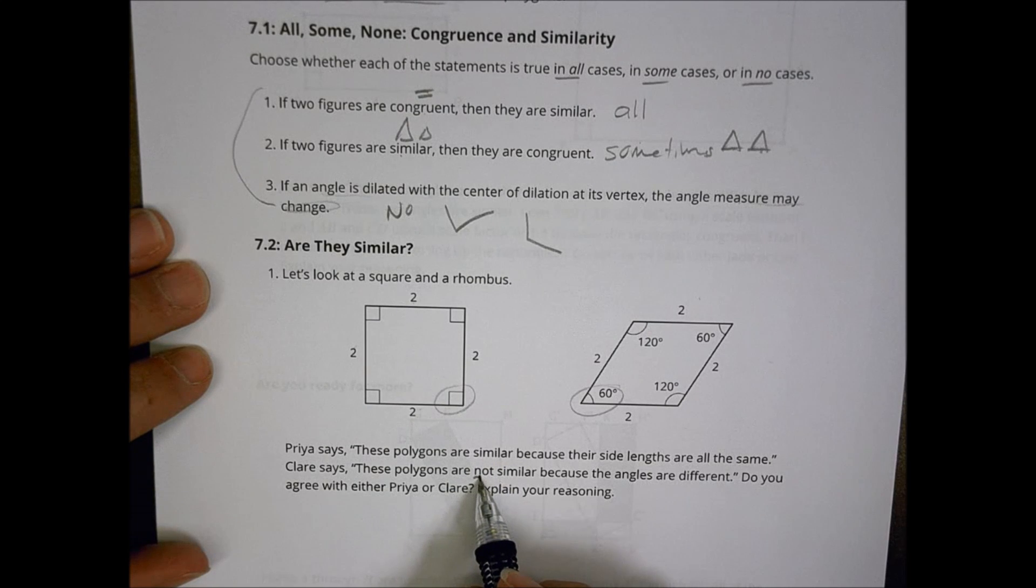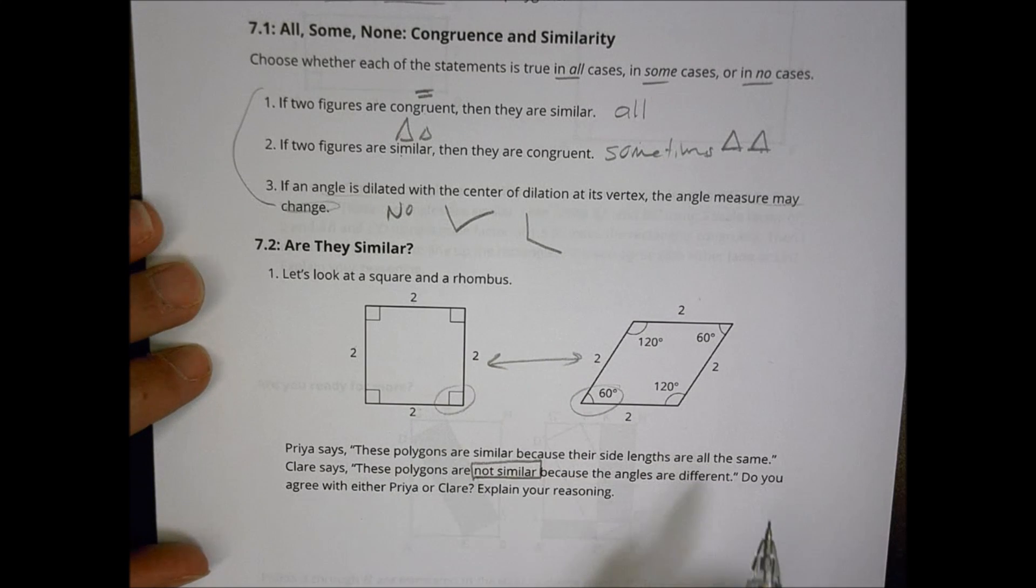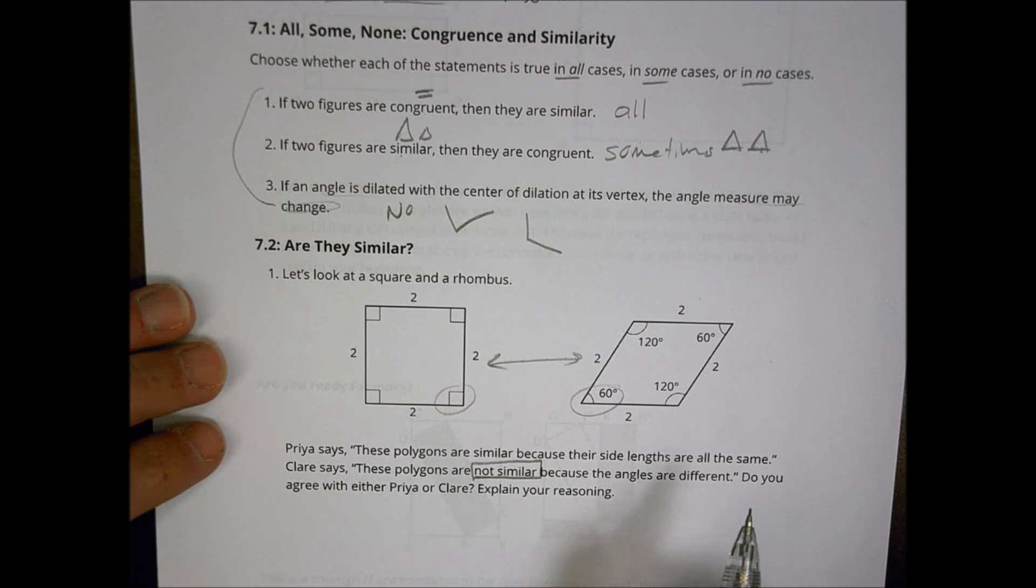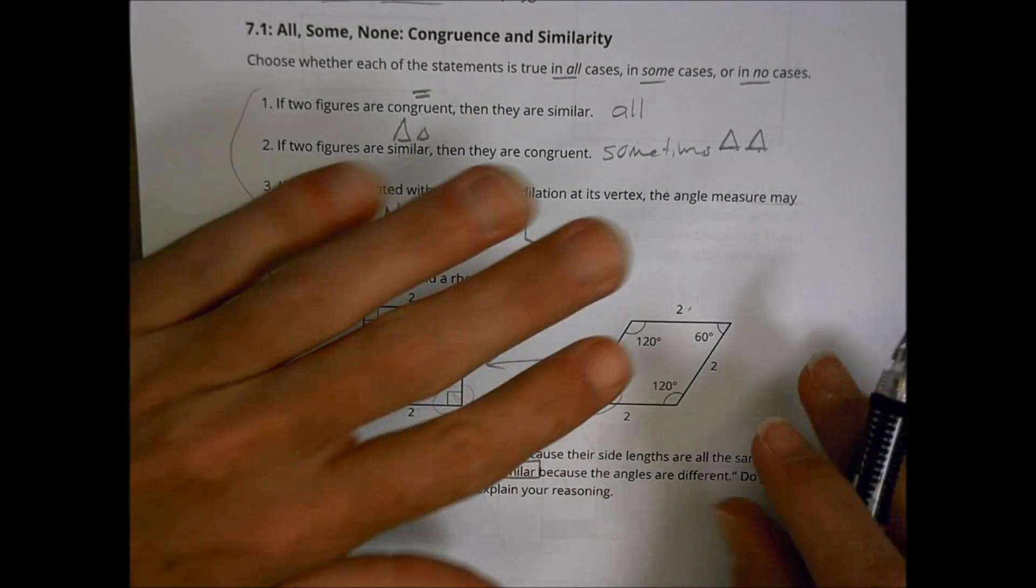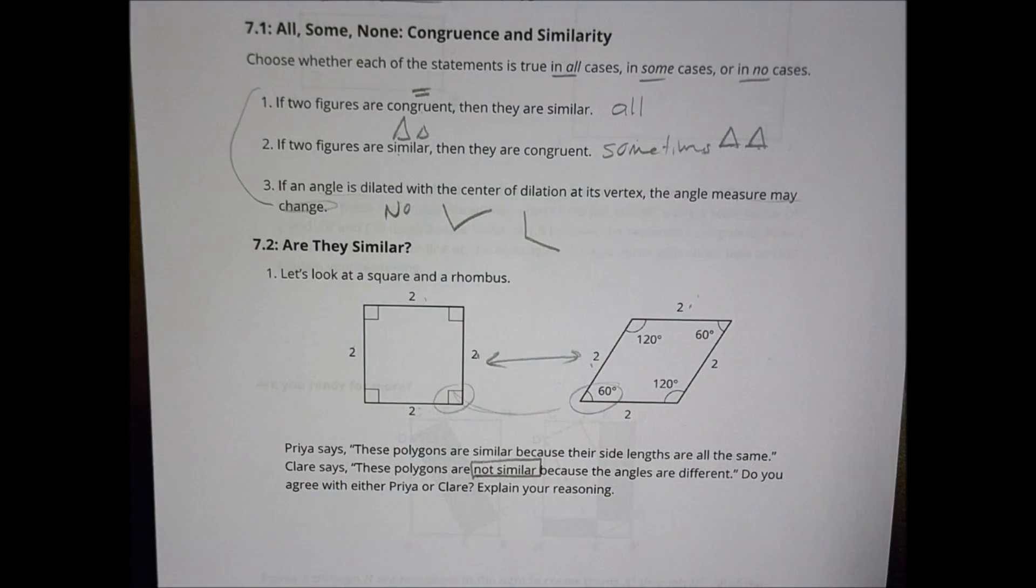And we would say, hopefully we talked about it, let's go with probably with Claire with the not similar. Even just looking at this visually, we can tell that there's something different about those two shapes. While the lengths might be the same, the angle measurements show that we have a totally different shape from one to the other.